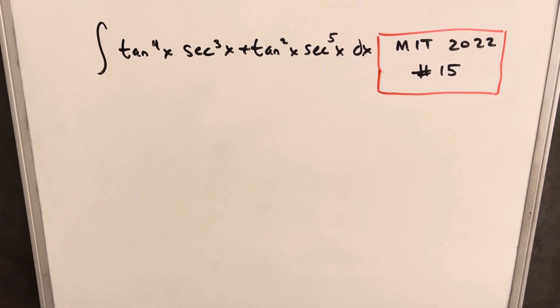Hey, we have a problem on the board from MIT Integration B 2022. This is problem number 15 from the qualifying exam. We've got the integral of tan to the fourth x secant cubed x plus tan squared x secant to the fifth x dx.